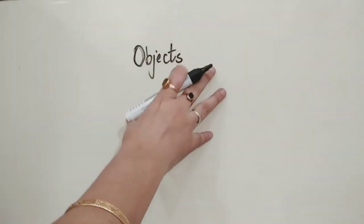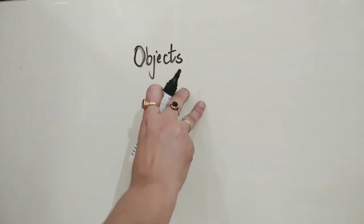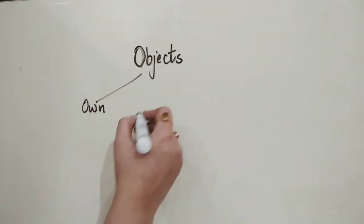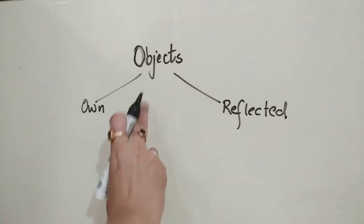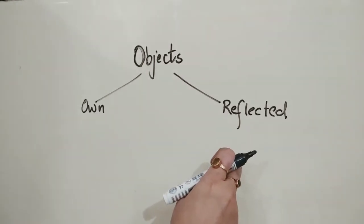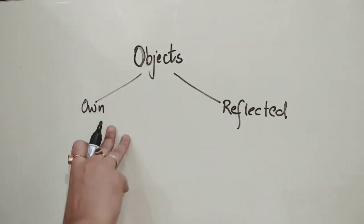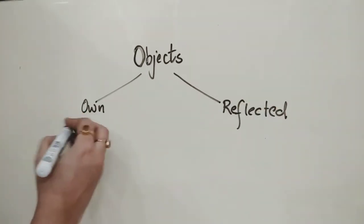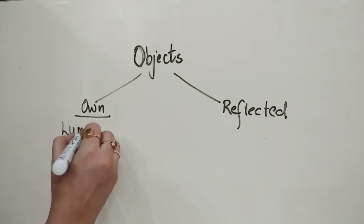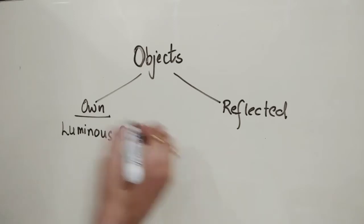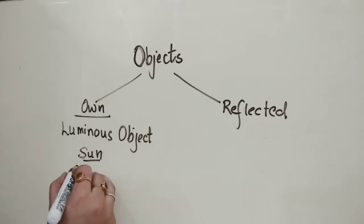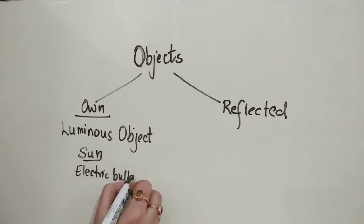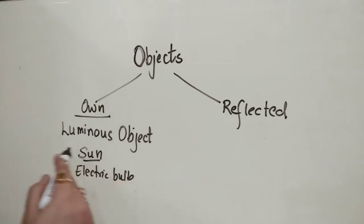Next, there are two types of objects. Objects are anything which gives out light — either of their own or by reflecting the light that falls on them. Objects which are producing their own light are known as luminous objects. For example, naturally we get light from the sun, and artificially the electric bulb. All materials which emit their own light are called luminous objects.